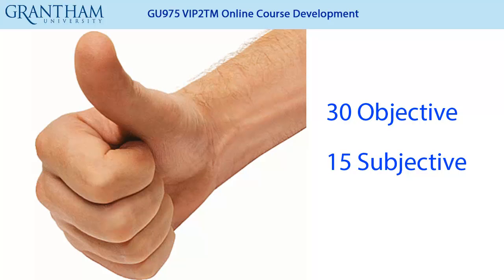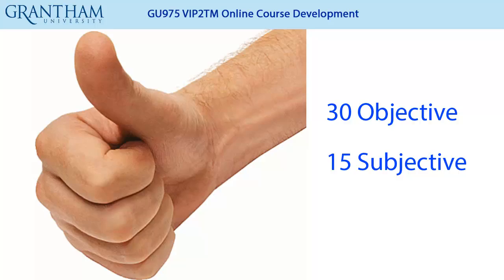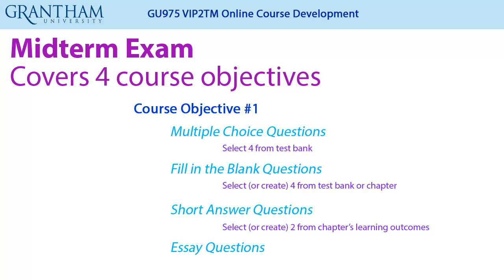The rule of thumb for developing the exam is to include approximately 30 objective questions and 15 subjective questions. Let's look at the midterm exam. If you have four course objectives to be covered on the midterm, you might include four multiple choice, four fill in the blank, two short answer, and one essay question for each course objective.